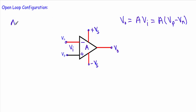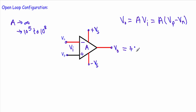An operational amplifier has a very high open-loop gain — in the ideal case it is infinity, and in the practical case it can vary from 10^5 to 10^8. Because of this very high open-loop gain, even the slightest amount of input voltage will cause the operational amplifier to operate in either positive saturation or negative saturation.